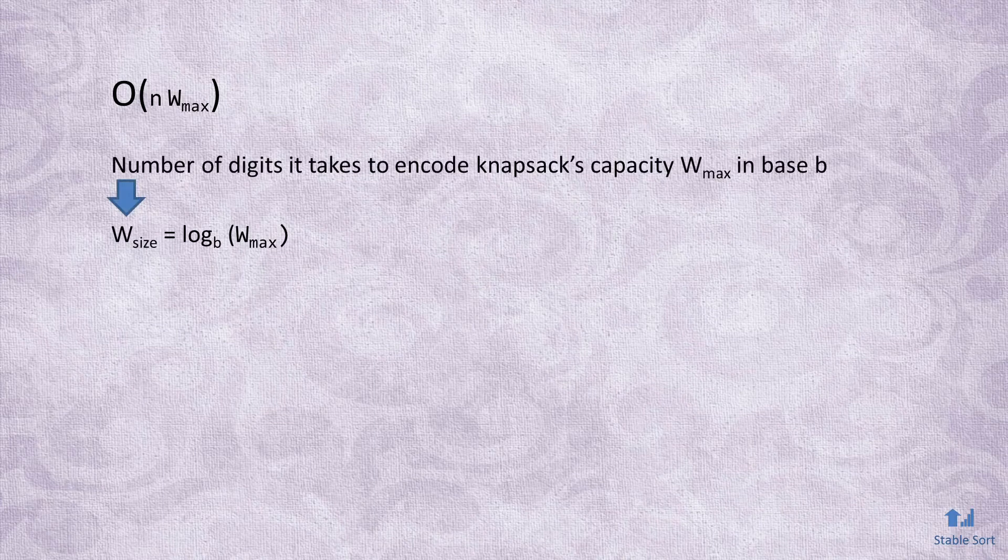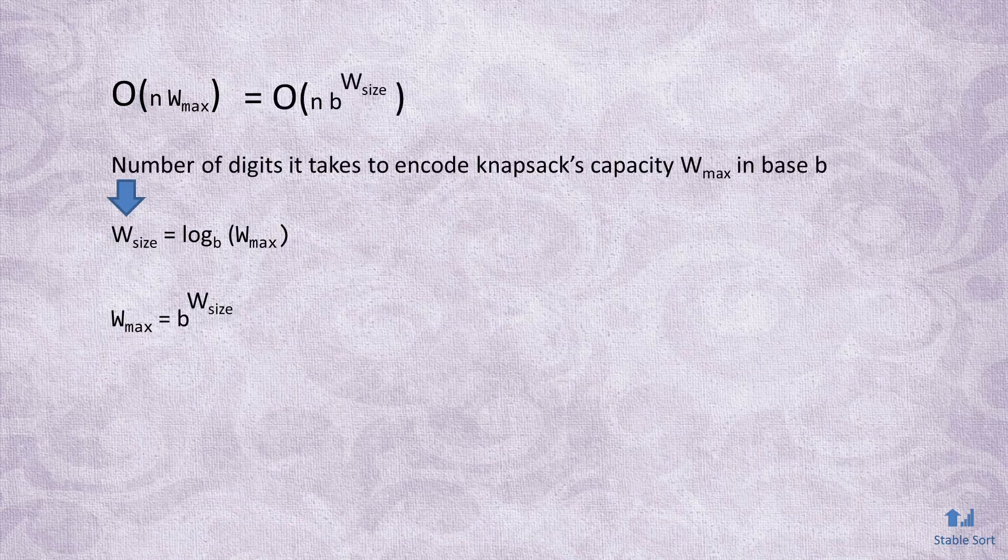We can do that by representing Wmax in terms of number of digits it takes to encode it. You can think of it as an array that contains each digit of Wmax. The length of this array would be log of Wmax, using whatever the base you used for your encoding. Call it base B. Then, solving for Wmax and plugging the answer into the formula, gives us a running time of order N multiplied by B to the power of W size.